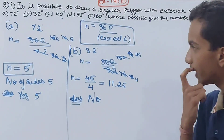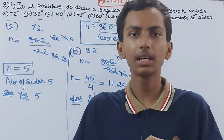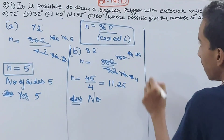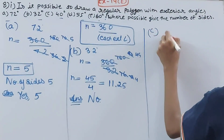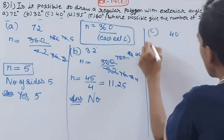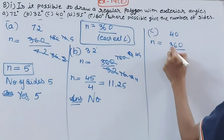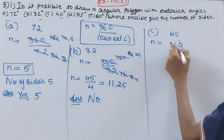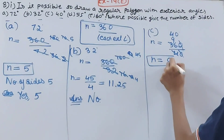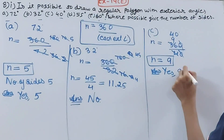The number of sides cannot be in decimals — you have never seen any polygon with a decimal number of sides. So the answer for part b is no, you cannot make a polygon. For part c, the exterior angle is 40 degrees. n equals 360 divided by 40. The zeros cancel, giving n equal to 9. So yes, we can make a polygon and it will have exactly 9 sides.